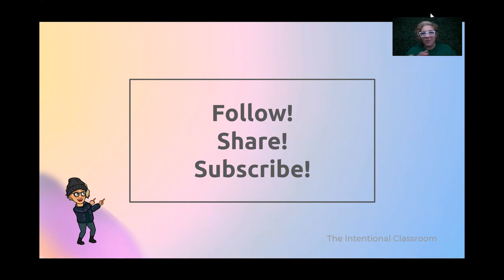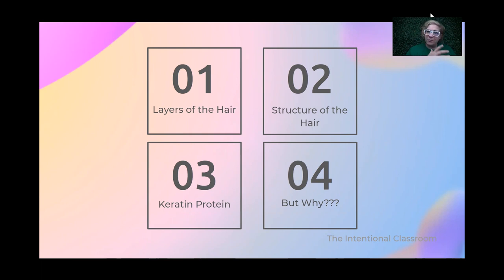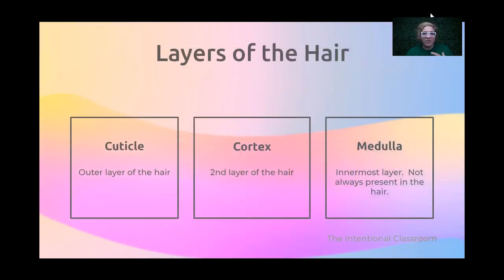Without any further delay, let's talk about four key things that you need to know about the structure of hair. We're going to start by talking about the layers of the hair, then the actual structure, the keratin protein and what that looks like, and why we need to know any of this information. That's the goal over the next 10-15 minutes.